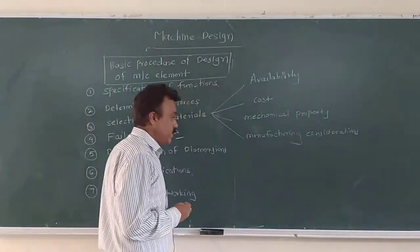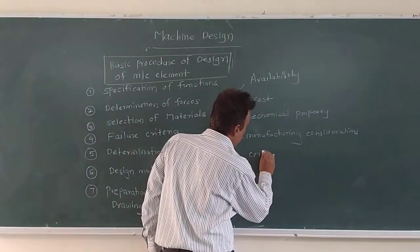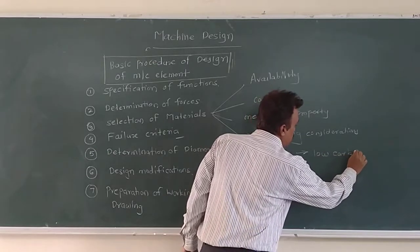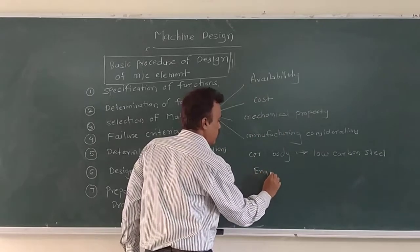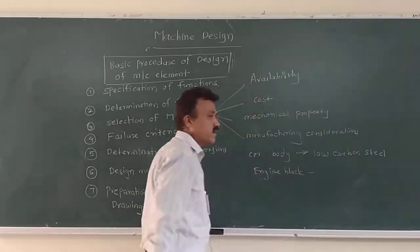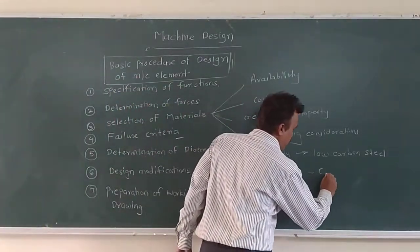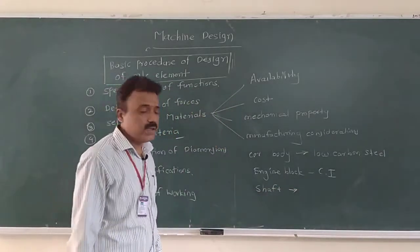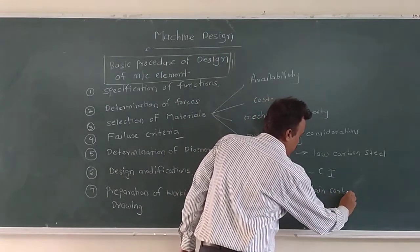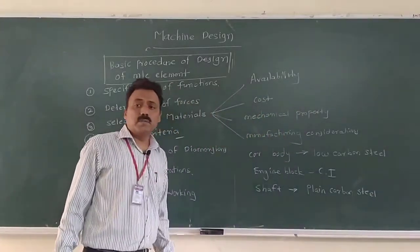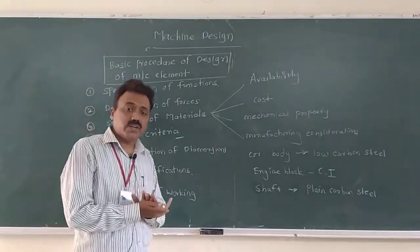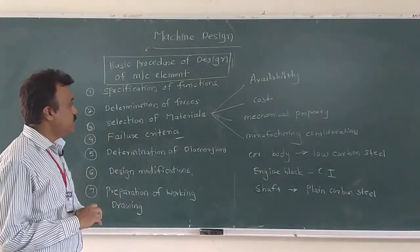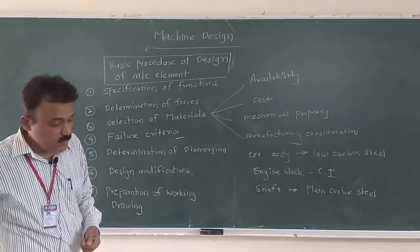For example, a pump body requires permeability and has a complex shape, so it is made up of cast iron. A transmission shaft — the most commonly used material is plain carbon steel. A crankshaft and connecting rod are subjected to fluctuating forces, so they are made of alloy steel. These are the different material considerations to be made while designing a component, which form part of the basic procedure of design of machine elements.